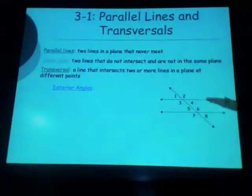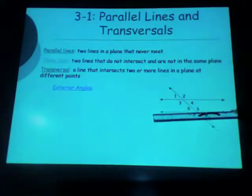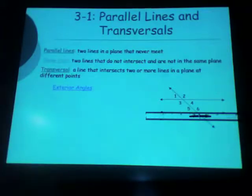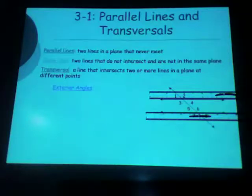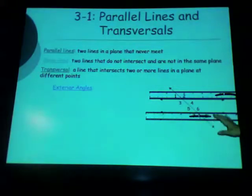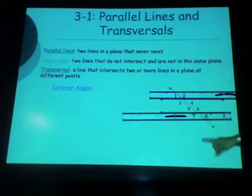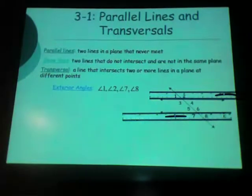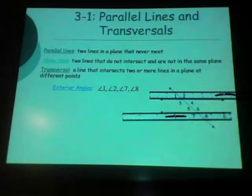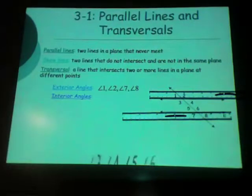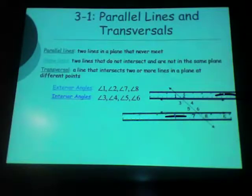And that's whether or not these lines are parallel — those relationships will still exist. Then we've got exterior angles. There are four angles on the inside between the two lines, and four angles on the outside of those two lines. Seven and eight and one and two — that's how you determine whether they're interior versus exterior. So your exterior angles are one and two and seven and eight. Use proper angle notation.